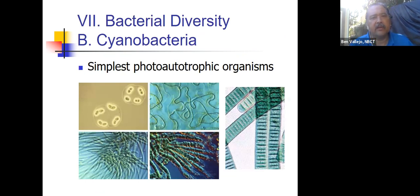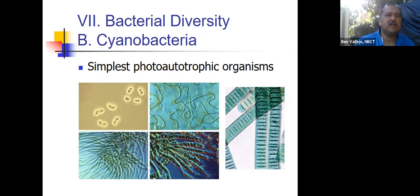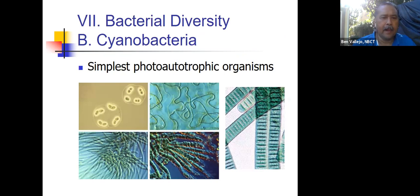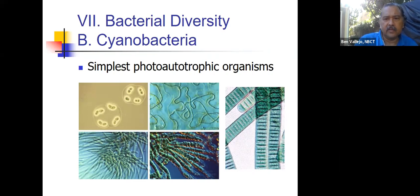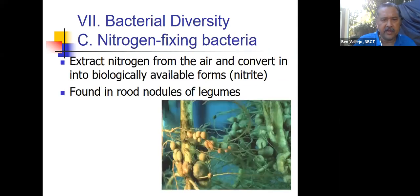Cyanobacteria are bacteria that can make their own food using sunlight — they are the most simple photosynthetic organisms. Here are some pictures of them. As you look at these, they have a green color because they have chlorophyll inside them — even though they don't have chloroplasts, they have chlorophyll. So these are photosynthetic organisms, and surprisingly some of them are bacteria.